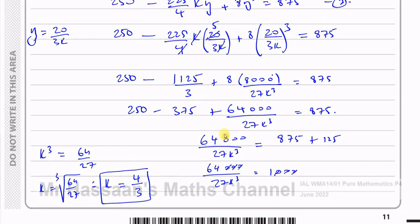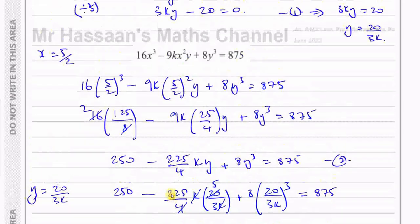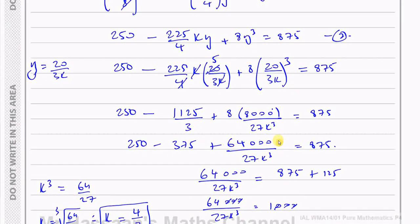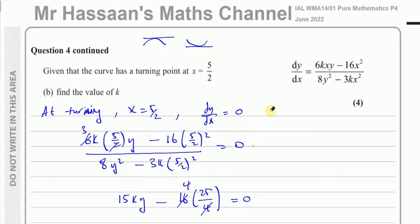In the exam, if you have time, checking your answer this way can help confirm you haven't made a mistake. That's the answer to question 4 from the June 2022 Pure Mathematics P4 paper. Links to other questions from this paper and to implicit differentiation topics can be found in the playlist and description below. Thanks for watching.